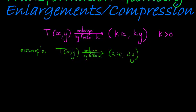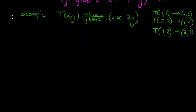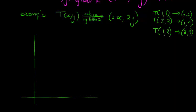What does this enlargement do? It literally doubles each coordinate. So the coordinate (1,1) becomes (2,2). The coordinate (½, 2) becomes (1, 4), since 2 times ½ is 1 and 2 times 2 is 4. And the coordinate (1, 2) becomes (2, 4). Let's see what this looks like if we actually draw it.